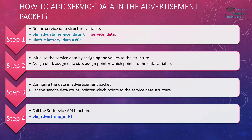The first step is we have to define the service data structure variable of type ble_advdata_service_data_t. Then we have to define another variable which is going to hold the value we need to transmit alongside the advertisement packet. For example, let's consider battery data with a level from 0 to 100, and we are sending 80 percent battery, so we define a uint8_t variable.